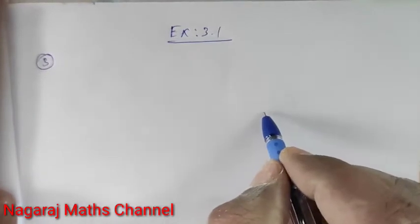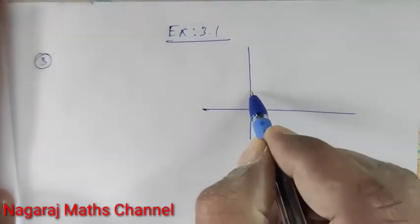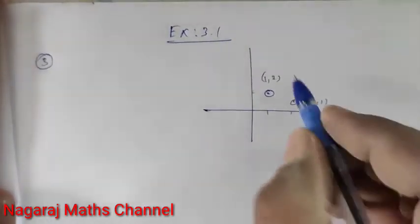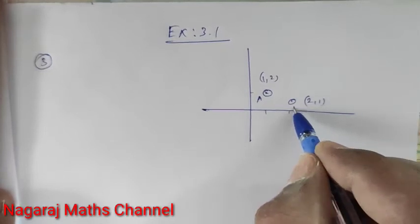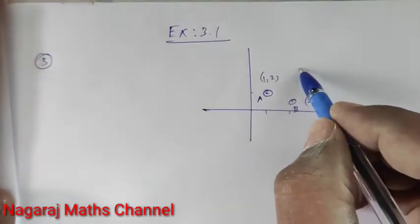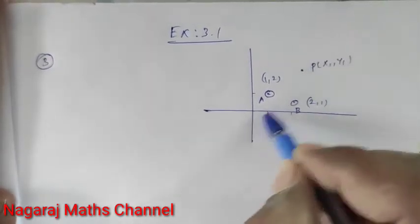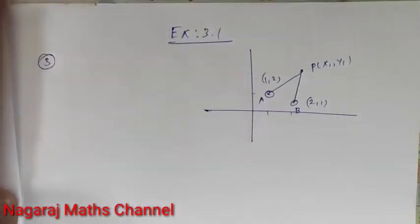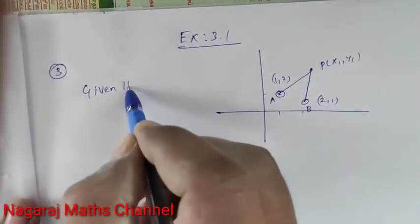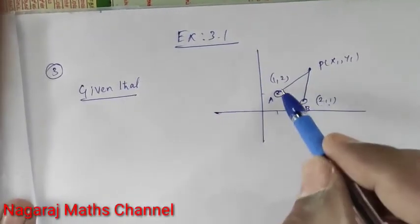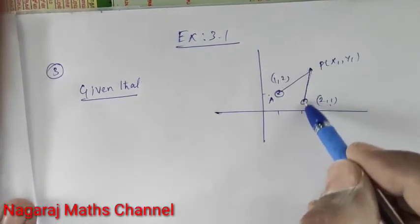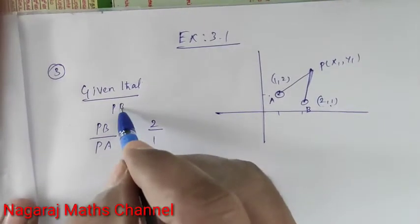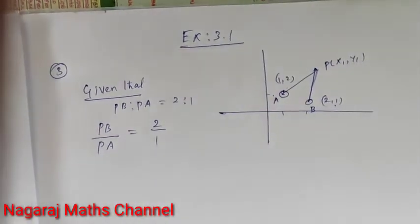Let point A be (1,2) and point B be (2,1). Let point P be (x1, y1). The distance between PA and PB is given such that PB to PA equals 2 to 1. So first point is (2,1) and second point is (1,2), and the ratio of the distances is 2:1.